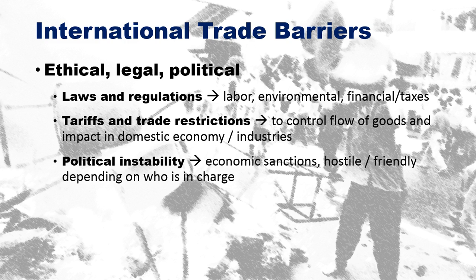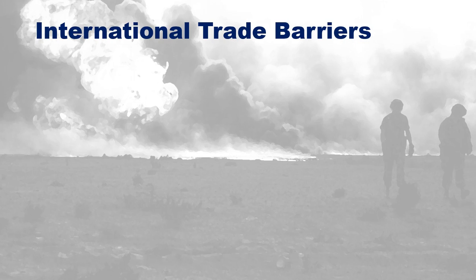Political instability can lead to economic sanctions and either hostility or friendliness in trade depending on who's in charge. It's very difficult to do trade when a nation is unstable. North Korea, for example, is under economic sanctions and acting very unstable. If something happened within North Korea, there could be spillage outside its borders, disrupting industries and nations dependent on them. Economic sanctions in Russia are another example.